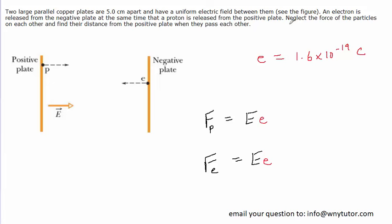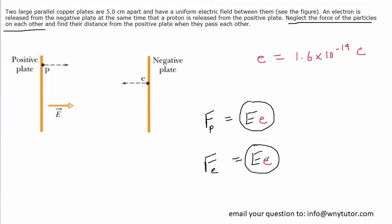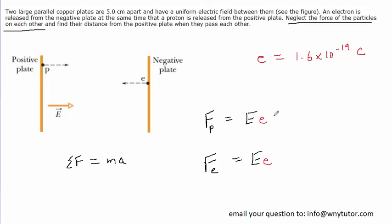The question notes that we can neglect the force of the particles on each other. That means the total force on the proton is simply this electric force, and the total force on the electron is this electric force. We recall from physics 1 that the total force acting on an object equals its mass times its acceleration. So we set each of these total forces equal to the mass of the particle multiplied by the acceleration of that particle.